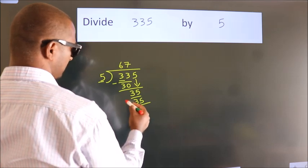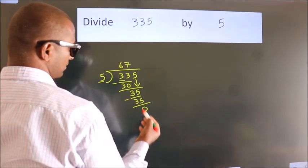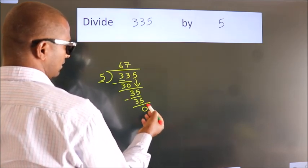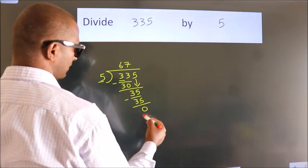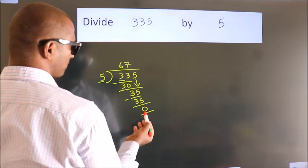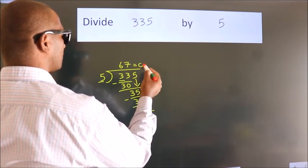Now, we subtract. We get 0. After this, no more numbers to bring down. And we got remainder 0. So this is our quotient.